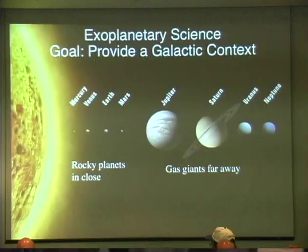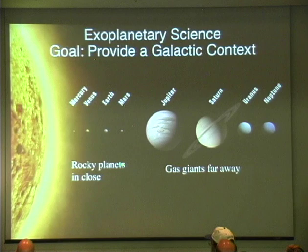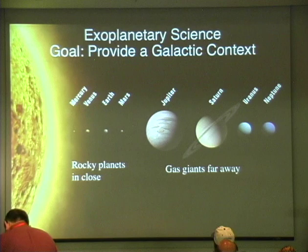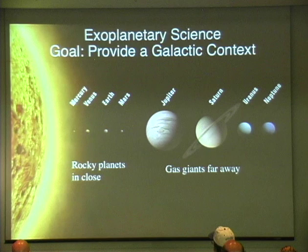We'd like to understand if this sort of architecture that we have in our system — with little tiny rocky planets in close, and these big gigantic gas balls further out where good gas giant planets belong, at least that we thought — we'd like to know if this sort of architecture is typical or if it is actually abnormal. Do we inhabit a unique place within the galaxy?